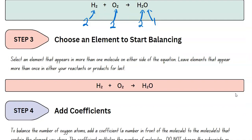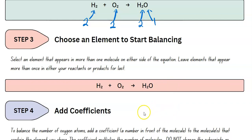Now, how we're going to balance is we're going to change a coefficient. This is very, very important. You cannot fix our oxygen problem by writing a two as a subscript here, because that changes the product — the product would then be hydrogen peroxide, not water. But that's not what you get when you combine hydrogen and oxygen. You get water in this reaction. So you can't change the product. The only thing you can do is change how many molecules of the product you get, and that is represented by a coefficient.